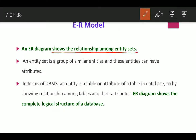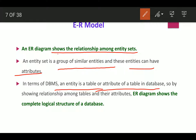The ER model shows the relationship among entity sets. Entity sets are nothing but tables — a group of similar entities. These entities can have attributes. In a table, rows correspond to entities and columns correspond to attributes. In terms of DBMS, an entity is a table, and an attribute is a column of that table.